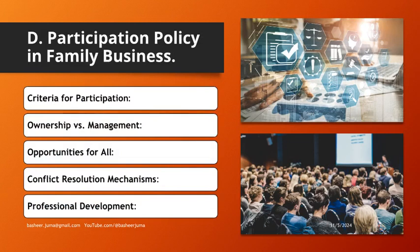Participation policy in family business. Criteria for participation specifies requirements for family members' business involvement. Ownership versus management distinguishes between owning and actively managing the business. Opportunities for all offers equal opportunity for family members interested in joining. Conflict resolution mechanisms provide structured methods for resolving disputes. Professional development encourages training for family members to ensure readiness.